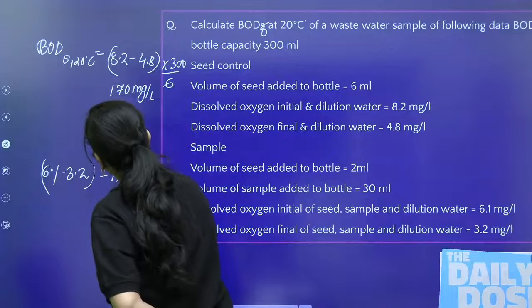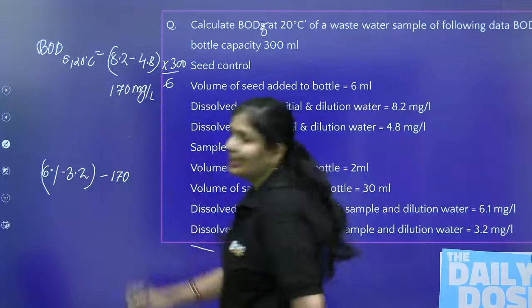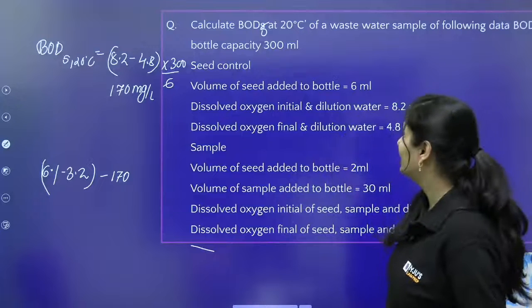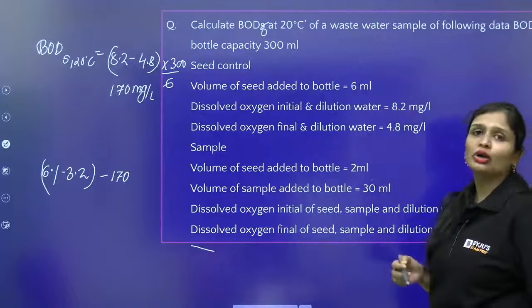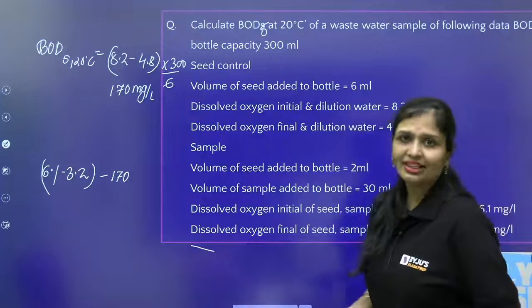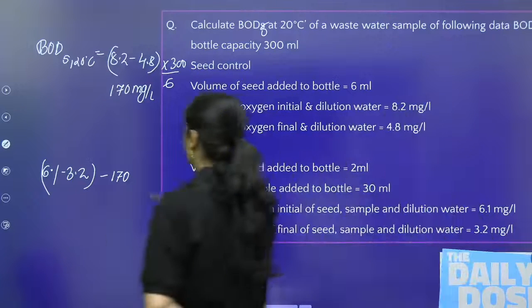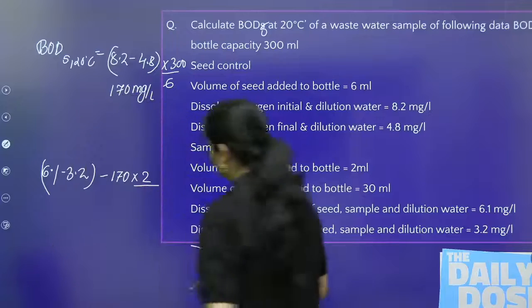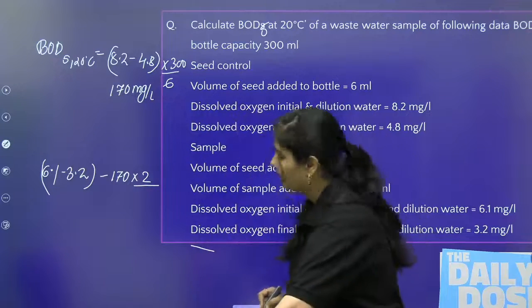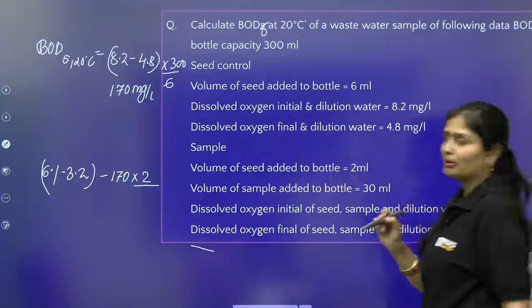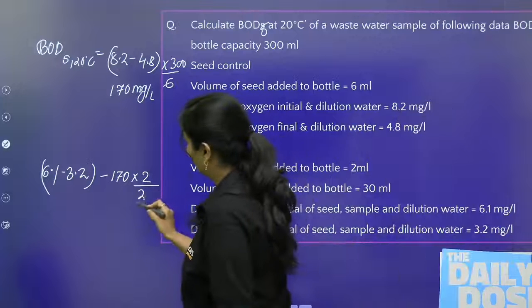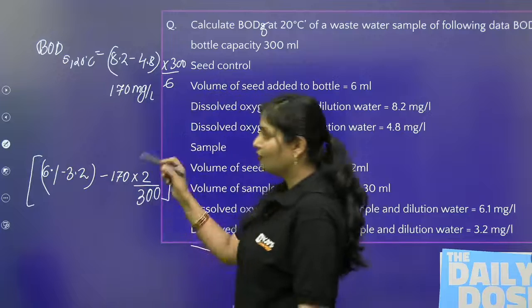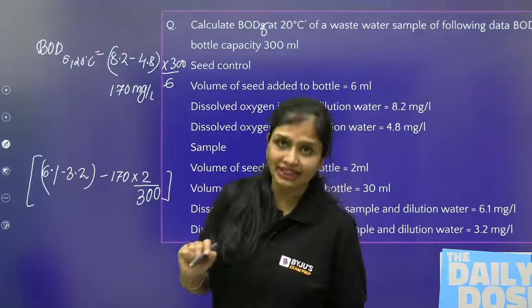It was 170 mg per liter for the seed control, but it was 170 mg in 1 liter. I don't mean 1 liter here - the seed is being added in smaller amount. So if it is 170 mg in 1 liter, how much will it be in 2 ml? So (170 times 2) divided by how much ml is present in the bottle - 300 ml.